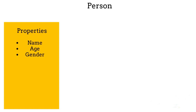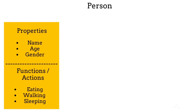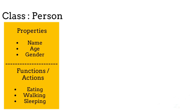Before storing the data, let's think about the properties of a person. For example, a person has a name, age, and gender. Each person also performs some actions like eating, walking, sleeping, etc. The structure used to store these properties and functions is called a class.